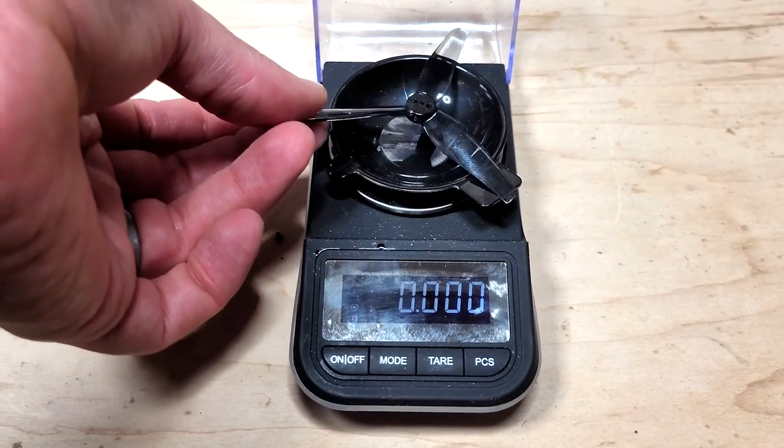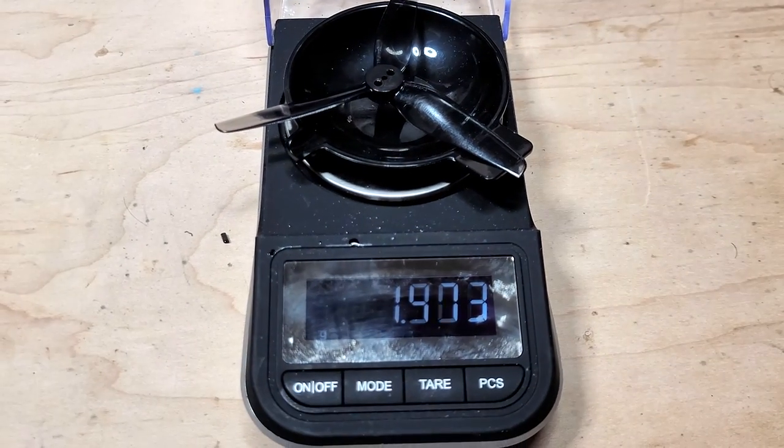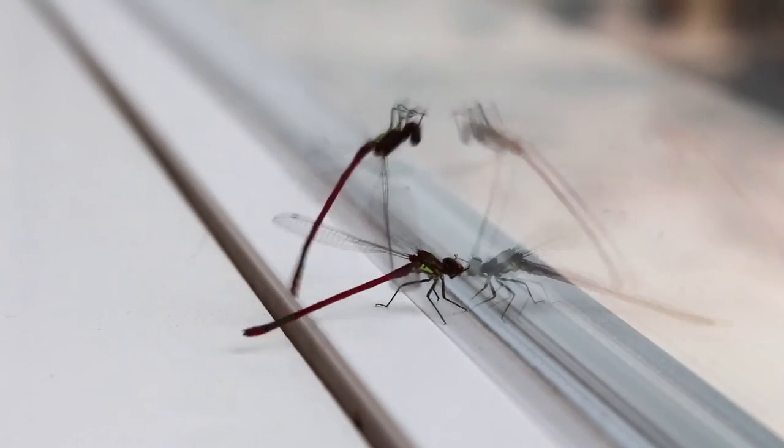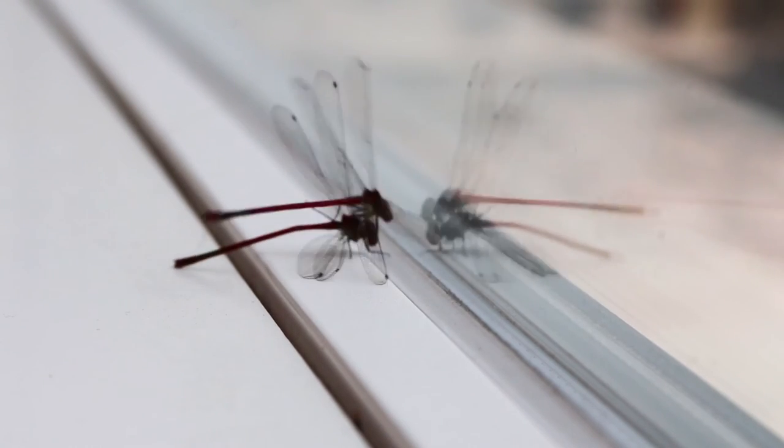The weight of the 2.5-inch propeller comes in at 1.6 grams, which makes it only 0.07 grams heavier than the 2-inch pitch propeller. With a more aggressive propeller, you expect to have a more aggressive flying aircraft. So the best place to start with is thrust!